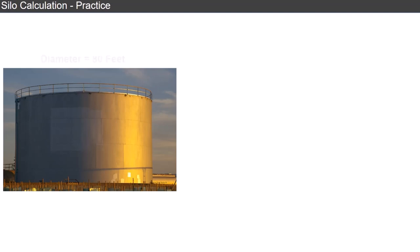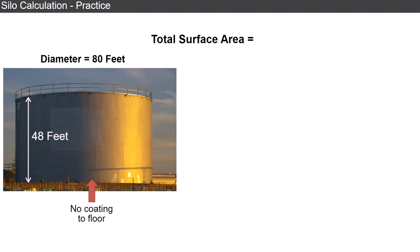This silo has a diameter of 80 feet and a height of 48 feet. Let's calculate the total surface area that needs covering. For the purpose of this exercise, we're assuming no coating needs to be applied to the circular floor, but the flat circular exterior top does need a coating.